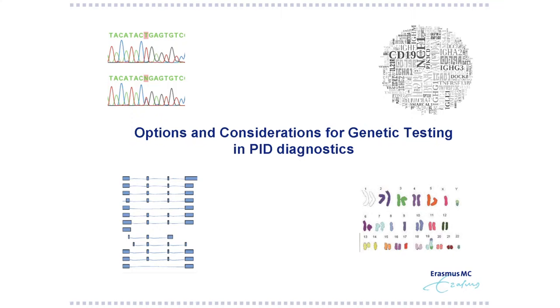This illustrates that doing PID diagnosis is not really easy — you have multiple genes, multiple presentations, and that makes it complicated. At this moment, we have different options for genetic testing, and I would like to discuss these options, because every technique or approach has advantages and disadvantages.